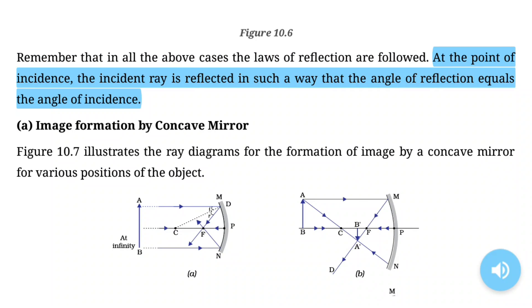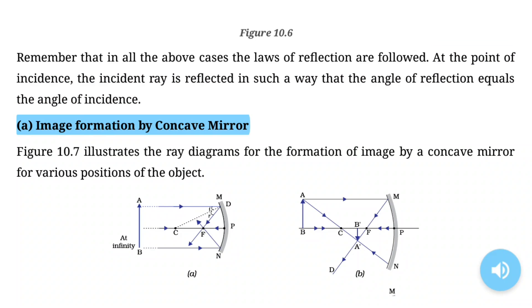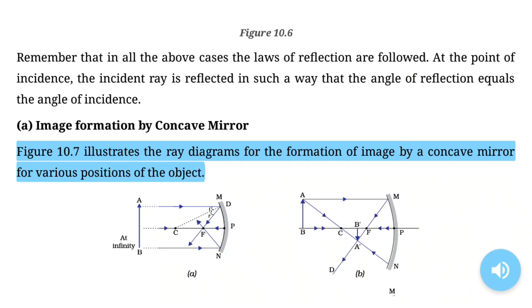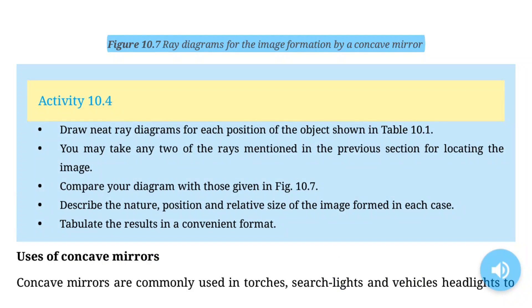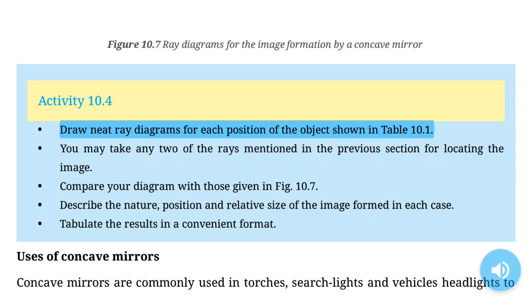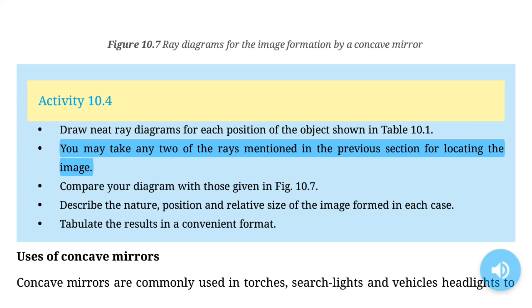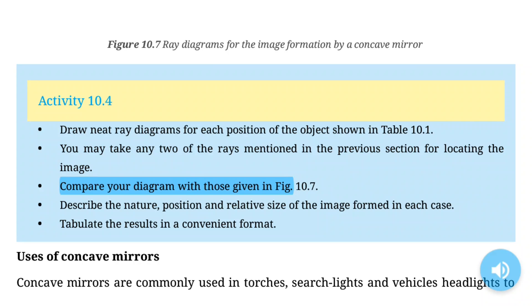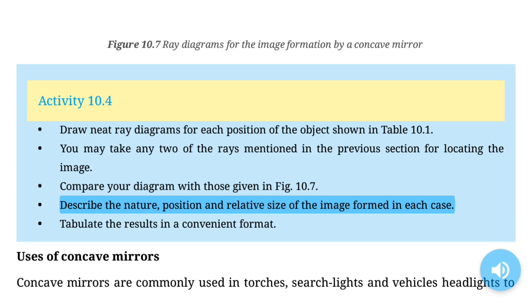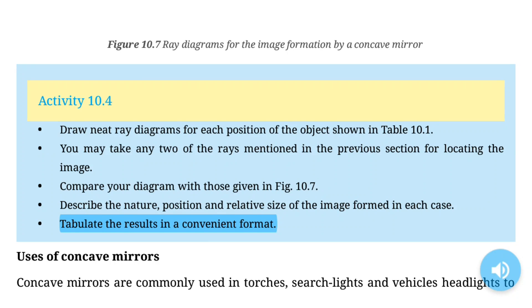For a ray incident obliquely to the principal axis towards the pole of the mirror — on the concave mirror or a convex mirror — it is reflected obliquely. The incident and reflected rays follow the laws of reflection at the point of incidence, making equal angles with the principal axis. Remember that in all the above cases the laws of reflection are followed. The ray diagrams for formation of image by a concave mirror illustrate image formation for various positions of the object.